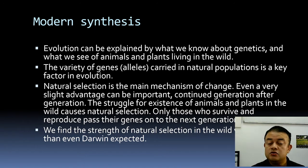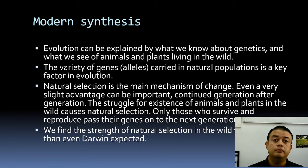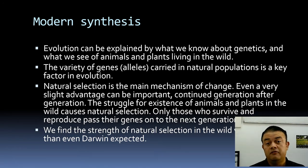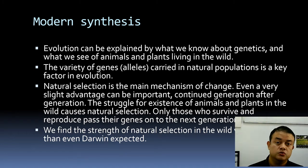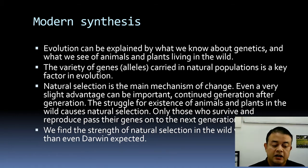Only those individuals who survive to reproduce pass their genes to the next generation. If you have deleterious genes, you might not even be born — stillbirths and abortion are part of natural selection. This is called purifying selection, a concept from the last unit. We find the strength of natural selection in the wild is greater than Darwin ever expected. Only those who survive and reproduce pass on their traits, making natural selection really powerful.